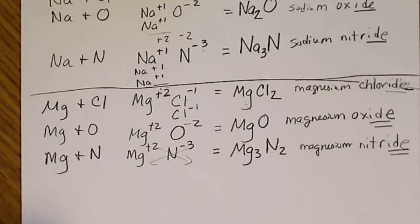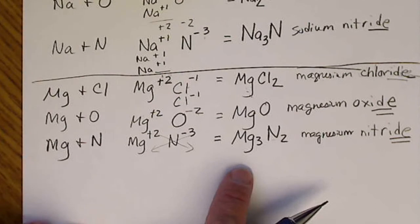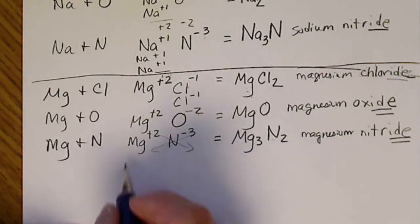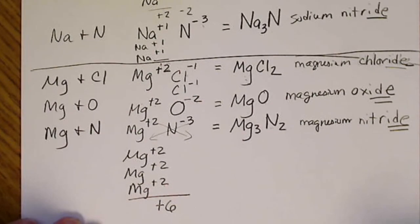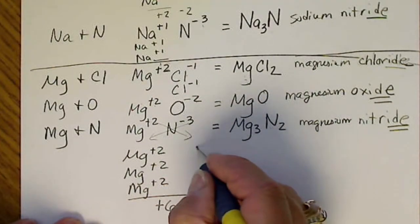So let's look at this formula here. We have 3 magnesiums. So that's Mg plus 2, Mg plus 2, and Mg plus 2. Well, 2 plus 2 plus 2 is 6.